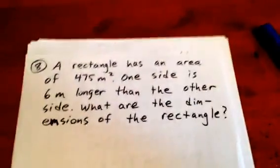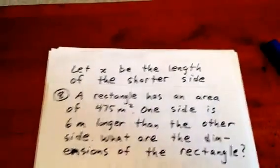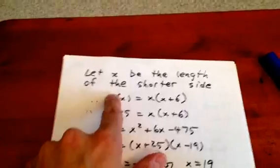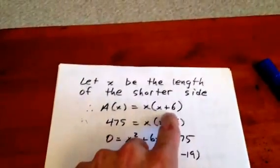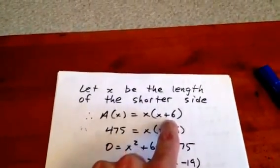What we do is we say that we're going to let x be the length of the shorter side, and since x is the length of the shorter side, the longer side must be x plus 6 because it's 6 units longer.